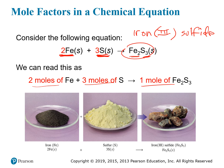Two moles of iron looks like this; three moles of sulfur looks like this. When you react them together, you get one mole of iron sulfide. Again, the mass of the iron and the sulfur is going to be equal to the mass of the product, iron 3 sulfide.